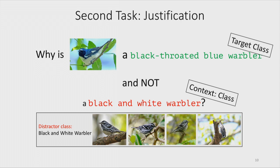For fine-grained categories where there might actually be confusion, justification would produce a sentence that convinces you the image belongs to the class I believe it is. For instance, you would not want to say it has a white belly because both birds have a white belly. If I explained it that way, you would not be convinced because that other category also has a white belly.